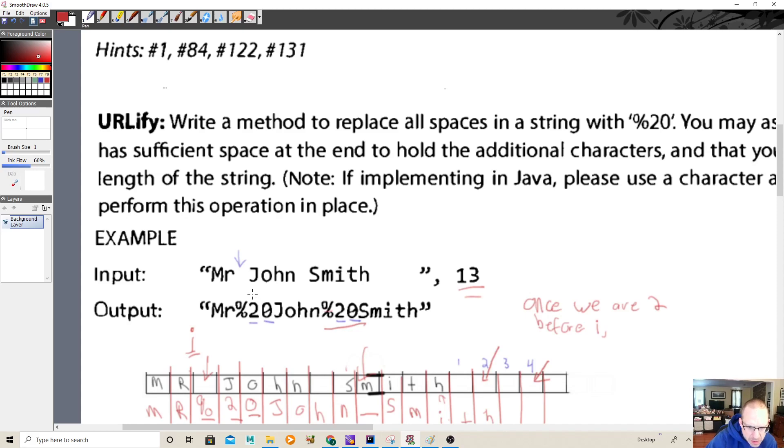And what you're given is you're given the string plus some spaces for the 20 and then the length of the string. So 13 means this is 1, 2, 3, 4, 5, 6, 7, 8, 9, 10, 11, 12, 13. And there's four spaces left over.